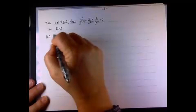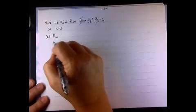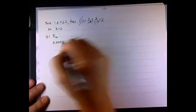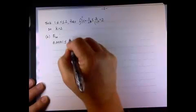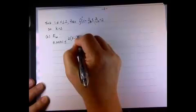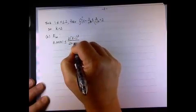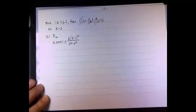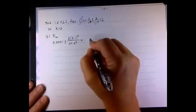So, a, let's calculate E sub m. Let's calculate this error. We have 0.001, like so. We know it's less than or equal to 2 times 2 minus 1 cubed divided by 24 times n squared.